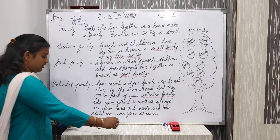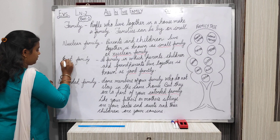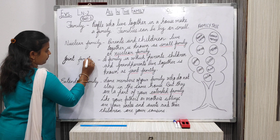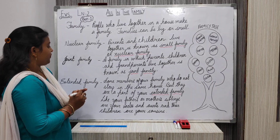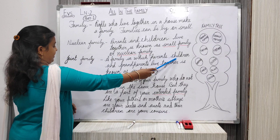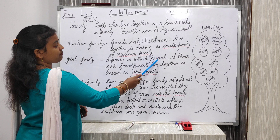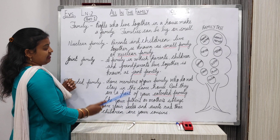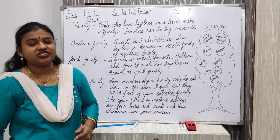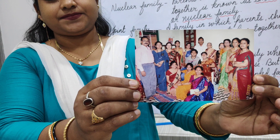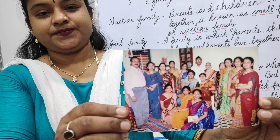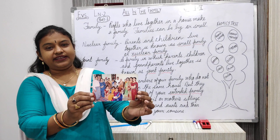Now let us go through the joint family. A family in which parents, children, and grandparents live together is known as joint family. I have one more example to show you how the joint family looks like. Here the parents are there, grandparents are there, and children are there — all are living together. That is known as joint family.